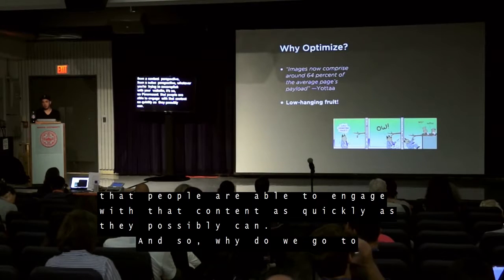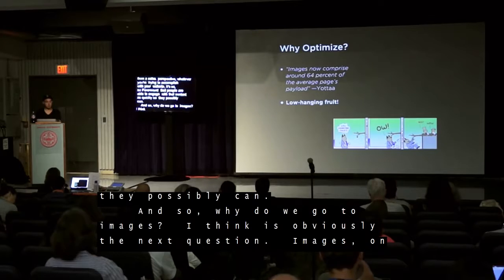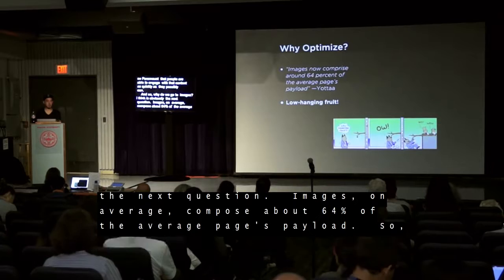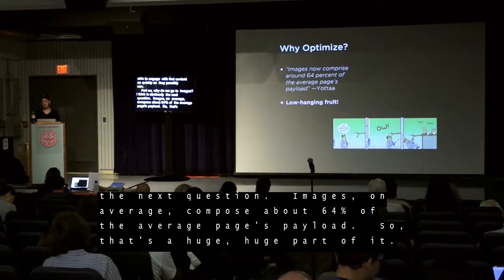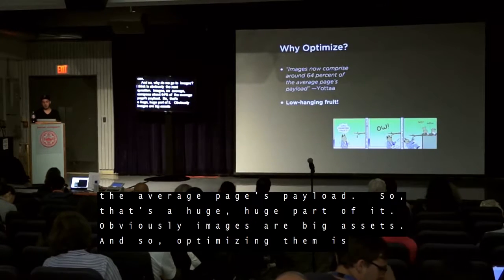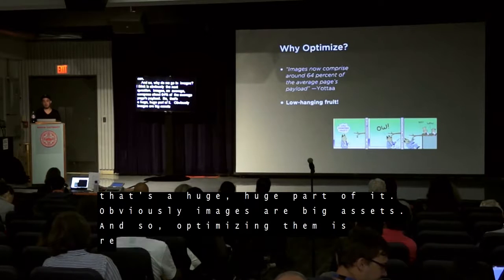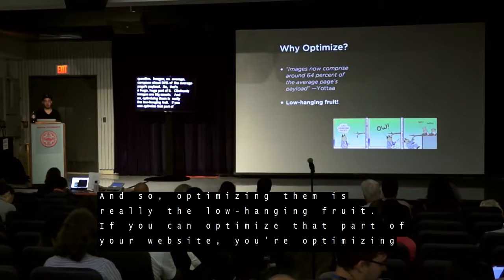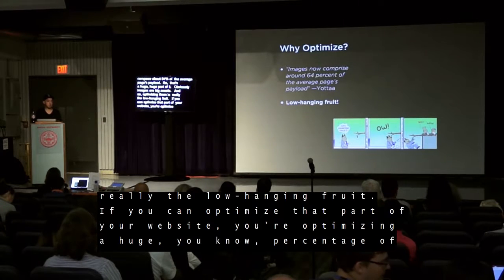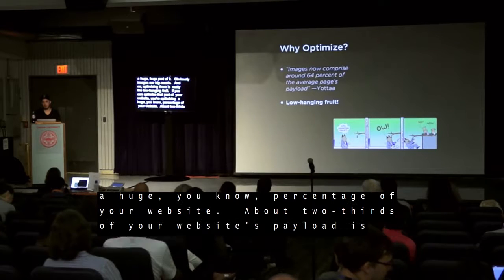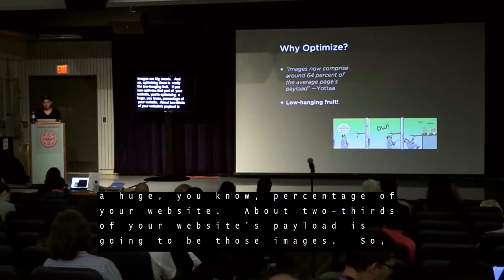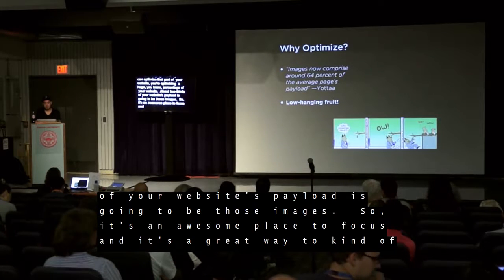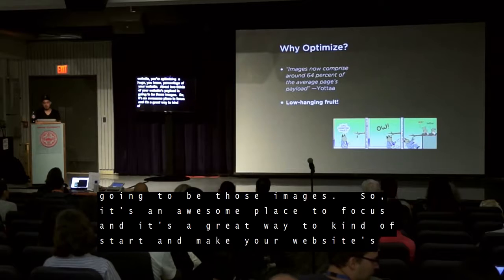So why do we go to images? Images, on average, compose about 64% of the average page's payload — a huge part of it. Obviously, images are big assets, so optimizing them is really the low-hanging fruit. If you can optimize that part of your website, you're optimizing about two-thirds of your website's payload. It's an awesome place to focus and a great way to make your website as performant as it could possibly be.